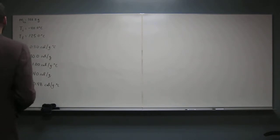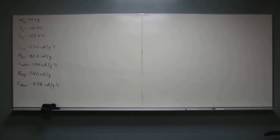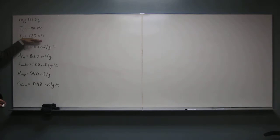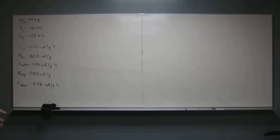So it's at negative 40 degrees Celsius currently. What state of matter is it in? It's a solid, right? Because negative 40 is below the melting point, which is zero degrees Celsius. So right now we're in the solid state, but we're going all the way up to 125. At that point it's a gas. So starting from a solid, we've got to go from solid to liquid to gas — so we've got to do a lot of different calculations here.